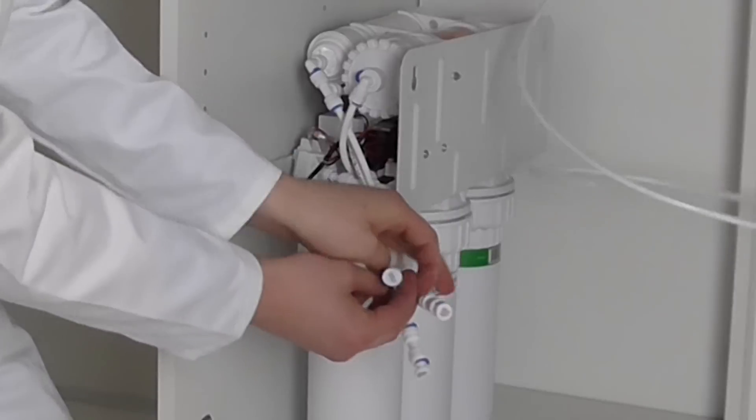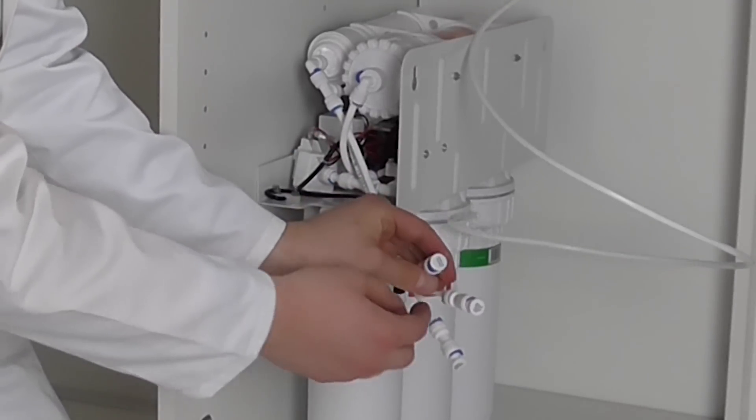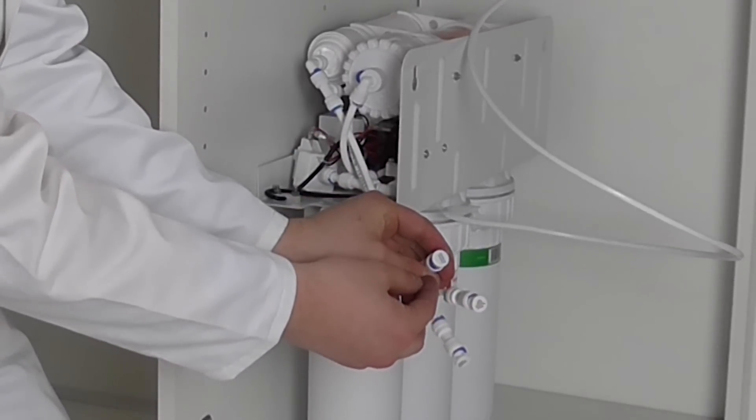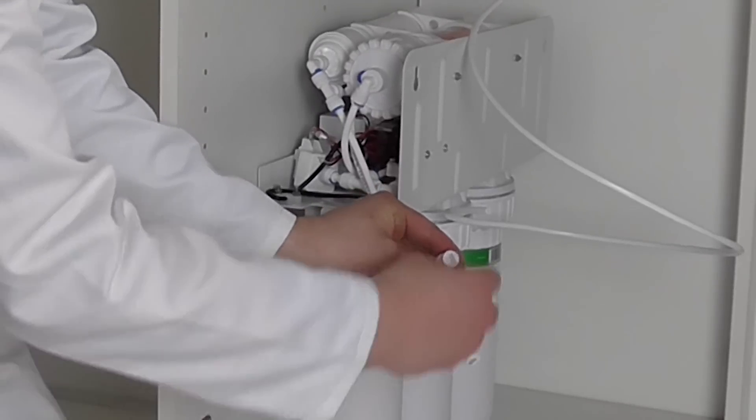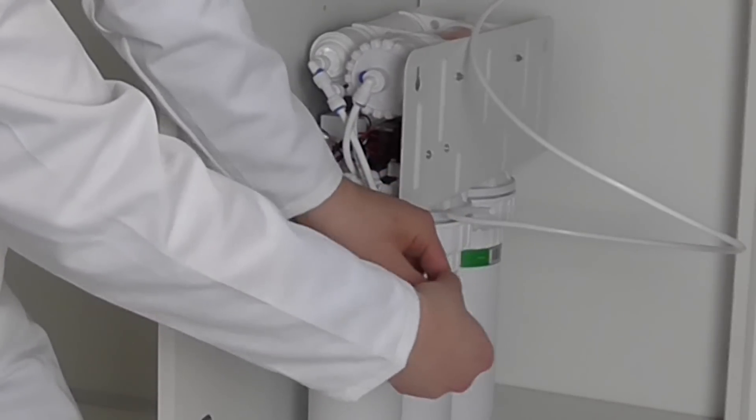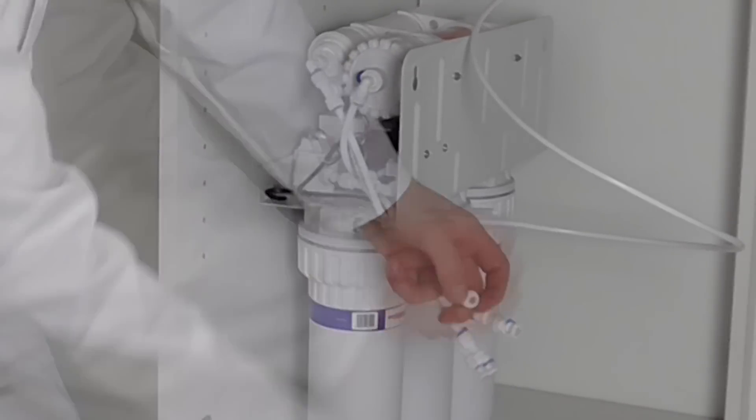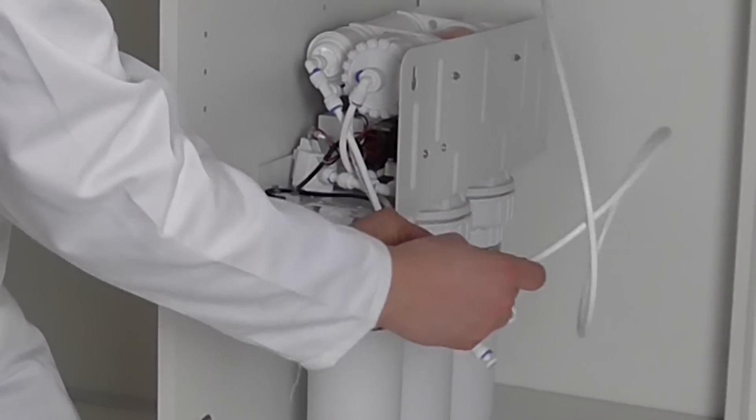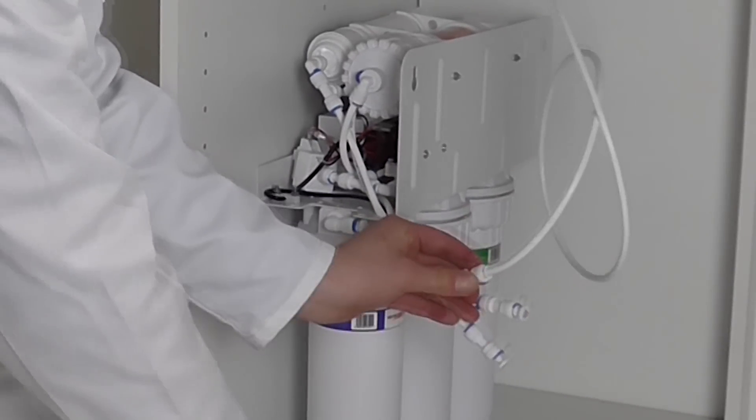Locate the faucet connection on the reverse osmosis unit. The faucet connection is color-coded with blue text. Remove the cap and connect the tubing from the tap. Secure with a blue clip.